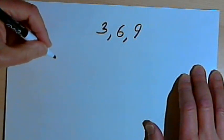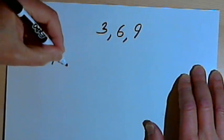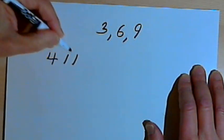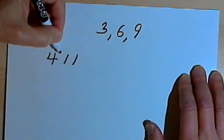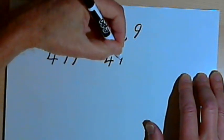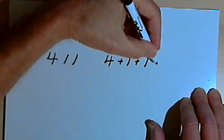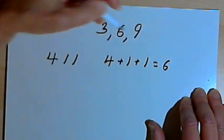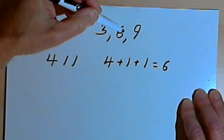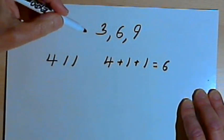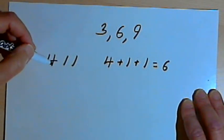So we could take the number 411. I want to know whether I can divide that by 3. So I'm going to add 4 plus 1 plus 1. 4 plus 1 plus 1 equals 6. I needed either a 3 or a 6 or a 9 to know whether I could divide by 3. So 411 is divisible by 3.